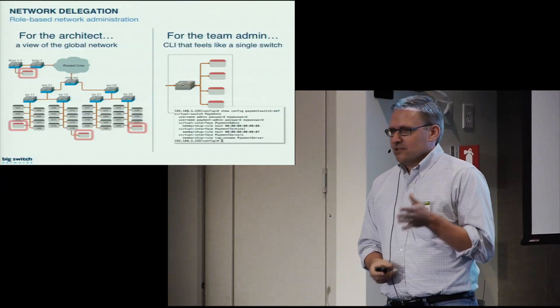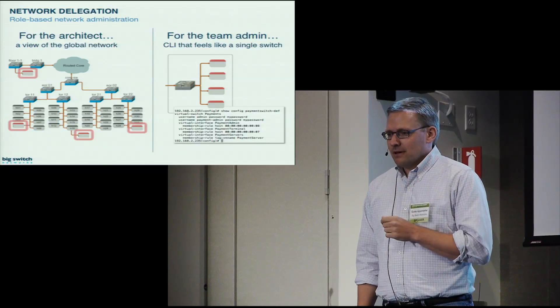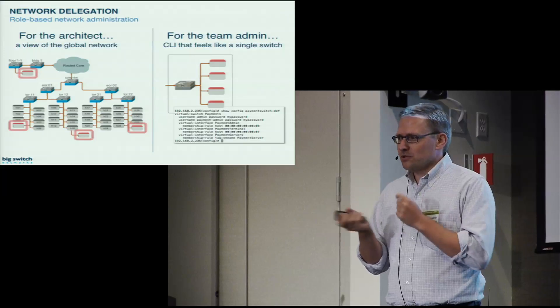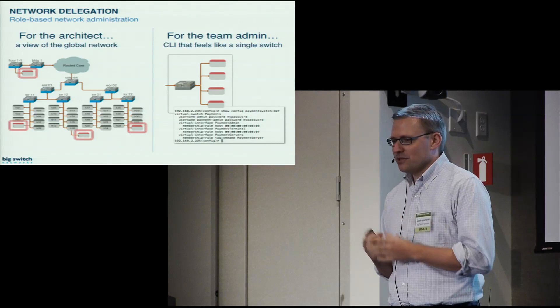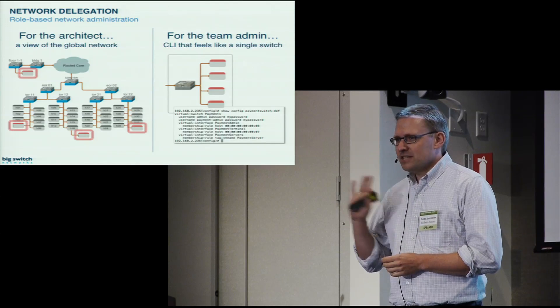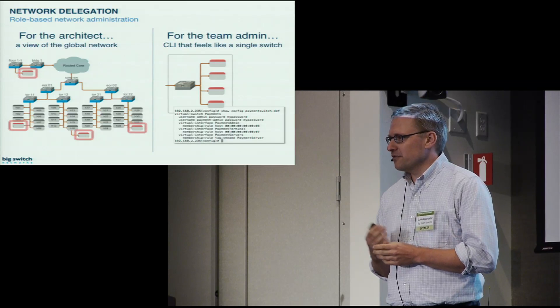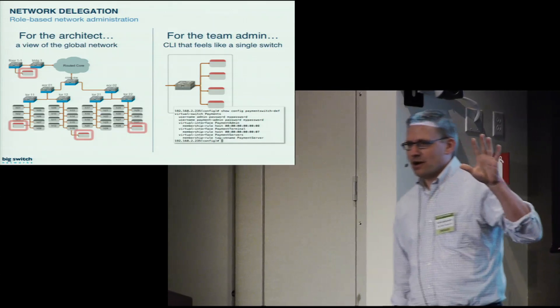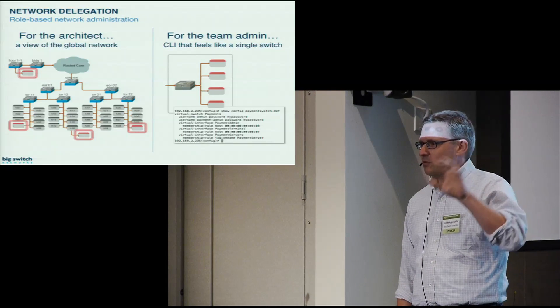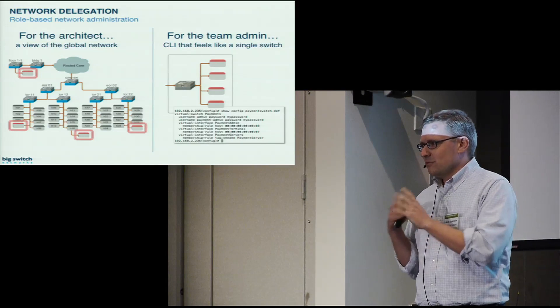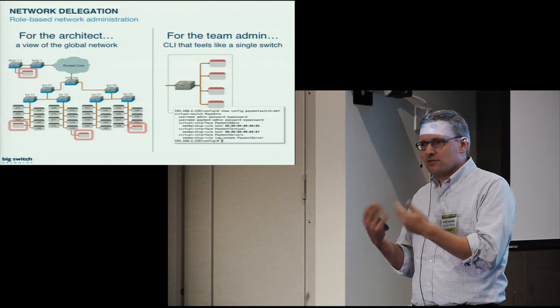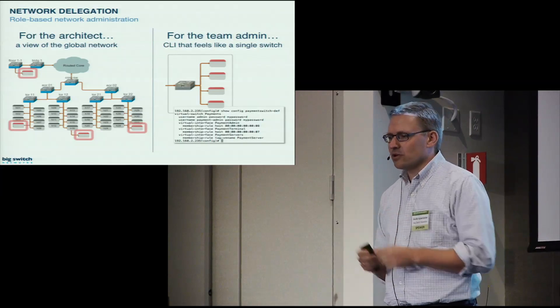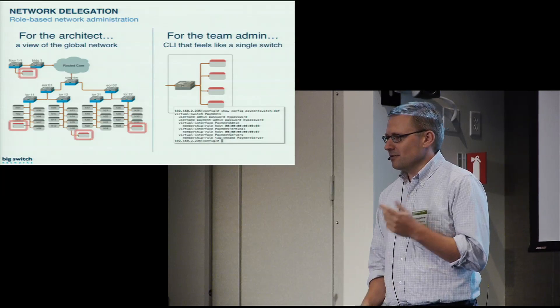Another key thing we're seeing is the capability to delegate. If I'm an architect, I want to think about the network in a certain way. I don't want to see everything. I want to know what's happening physically. I want to see all the switches. The team administrator who's worrying about a particular application wants to have a very different view. Our model is a model where the network architect can say, I pick a couple of end hosts, I map them to what we call a virtual switch, and then we can delegate out that virtual switch. The actual day-to-day administration of this virtual network can be done by somebody else who has only very limited privileges and who basically is in a sandbox and can only change things on this particular network.